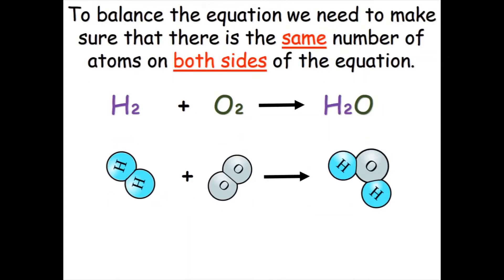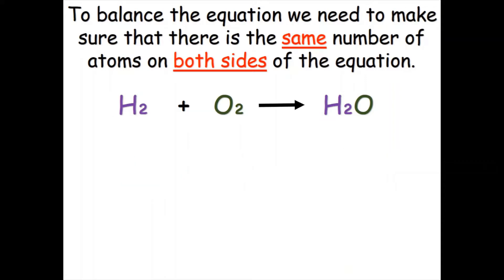To balance the equation we need to make sure that there is the same number of atoms on both sides of the equation. As I've just explained, this is not the case, and we can see this when looking at the atoms here. So now we are going to balance this equation.